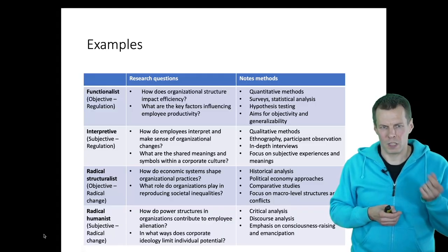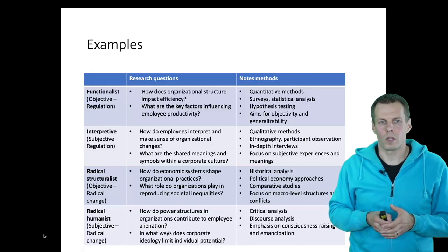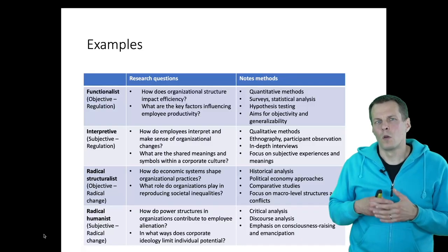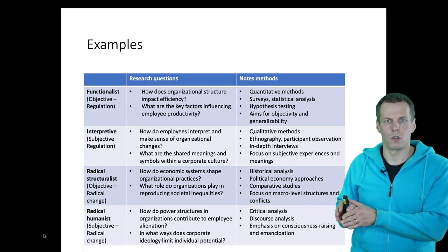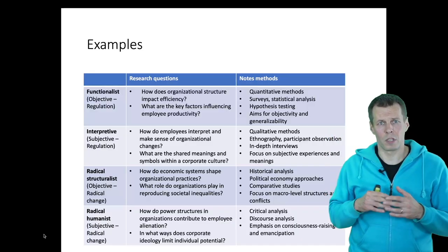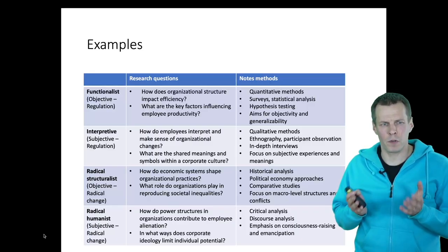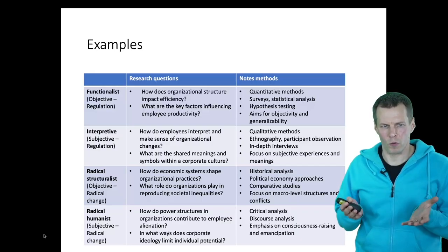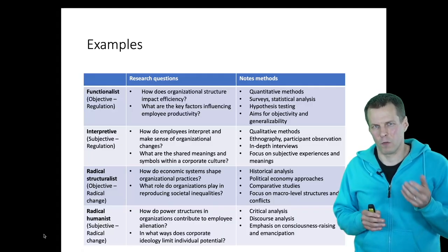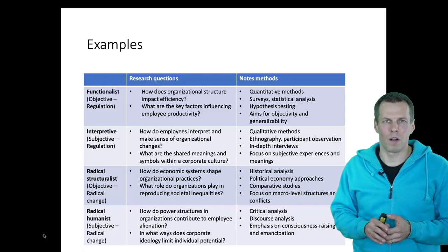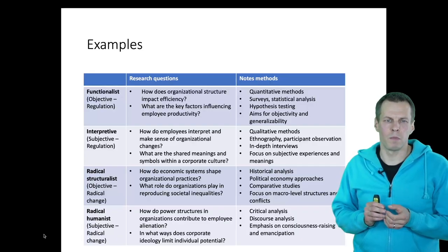The interpretive perspective is more focused on the subject, using qualitative research — for example, how do employees interpret and make sense of organizational change, or what are the shared meanings and symbols within organizational culture? We might study documents or do ethnography, living in an organization to understand it deeply rather than seeking broad patterns. In the context of business research, the radical structuralist might examine how economic systems shape organizational practices or what role organizations play in reproducing societal inequalities — for example, what was the role of regulation or lack thereof in enabling scandals such as Enron.